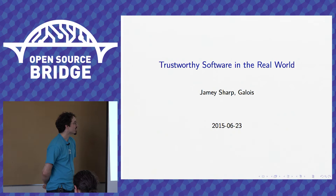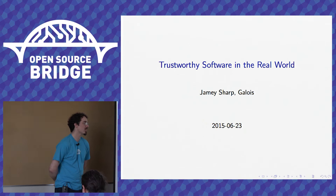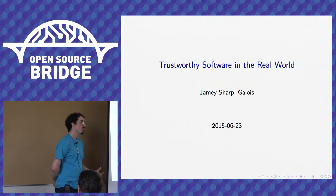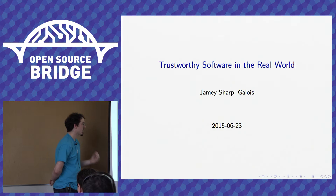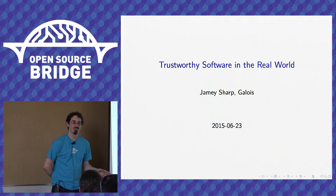There's a little bit of dual meaning in the title here. This is 'trustworthy software in the real world' in one sense because I'm talking about software that interacts with the real world, that interacts with physical systems. But in another sense, a lot of what I'm talking about here is tools for improving software quality that have been kind of restricted to academia. I want to talk about how you can actually apply these kinds of tools in real projects, and not just in the ivory tower sort of world.